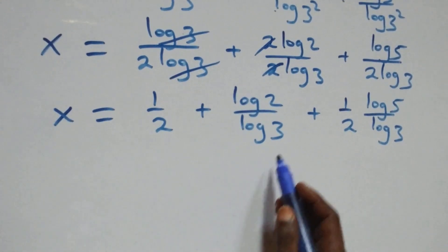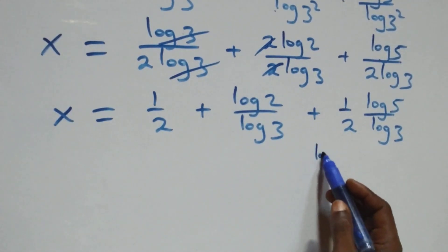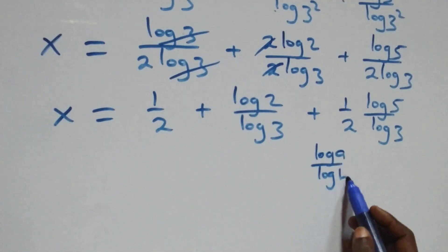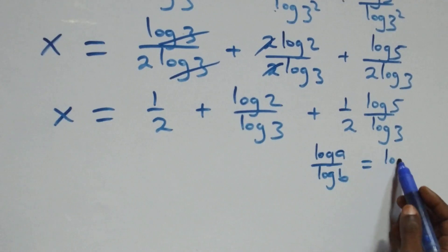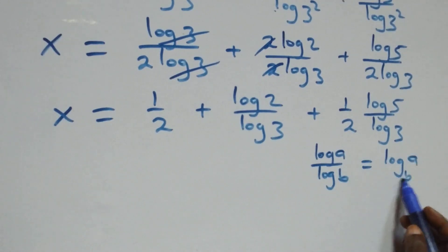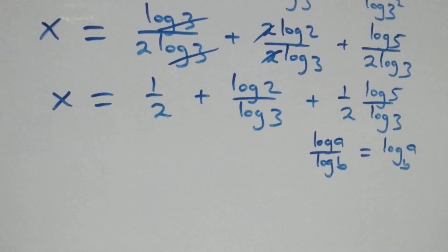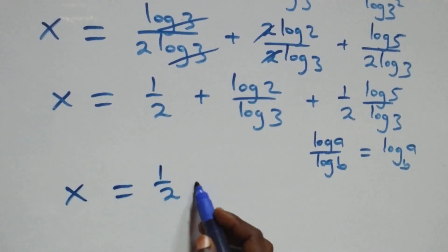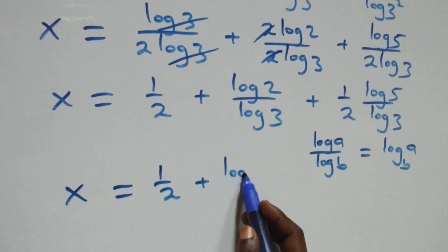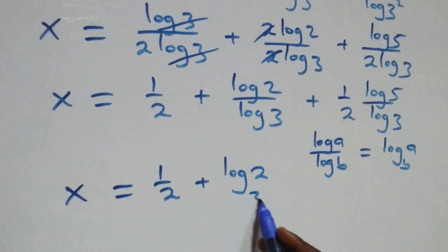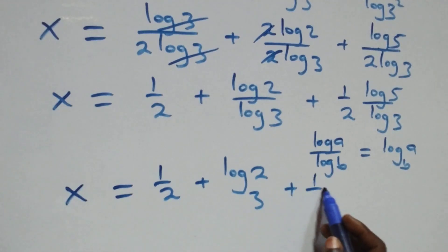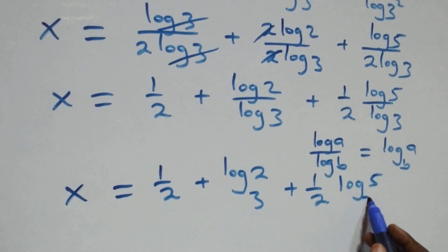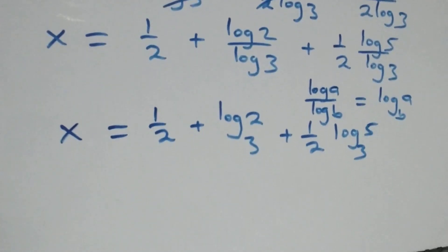Applying the change of base formula — log a over log b equals log a to base b — we get x equals one half plus log 2 to base 3 plus half times log 5 to base 3.